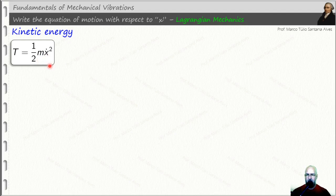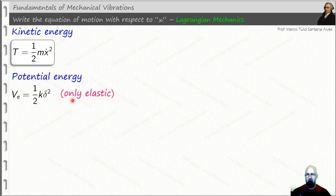The kinetic energy is simply T equals 1 over 2 m x dot squared. For the potential energy, it's simple, V equals 1 over 2 times stiffness k times spring deformation delta squared, just only elastic potential energy here.